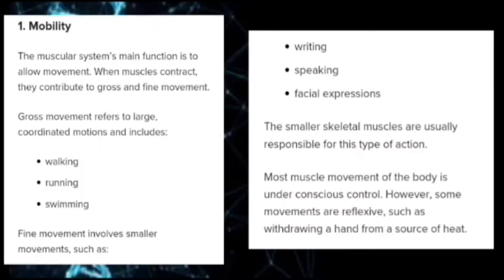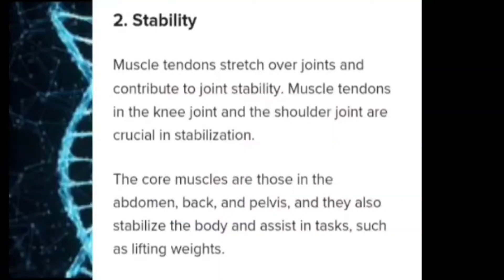Most muscle movement of the body is under conscious control. However, some movements are reflexive, such as withdrawing a hand from a source of heat. Muscle tendons stretch over joints and contribute to joint stability. Muscle tendons in the knee joint and the shoulder joint are crucial in stabilization. The core muscles in the abdomen, back, and pelvis also stabilize the body and assist in tasks such as lifting weights.